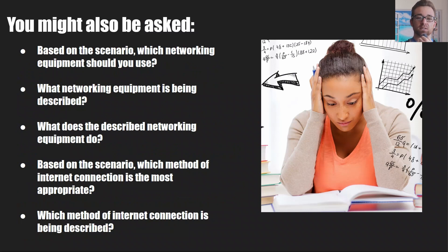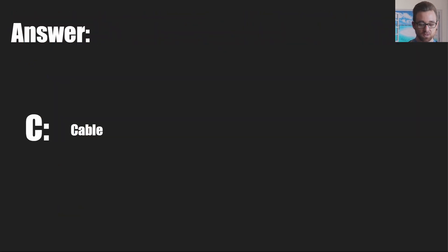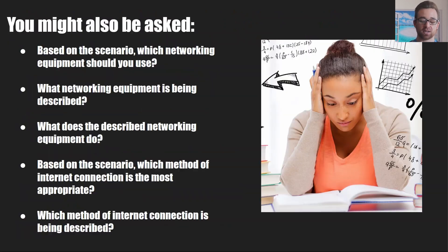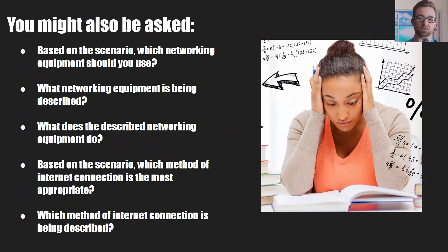Optical network terminal — fiber would need an optical network terminal, and satellite would need a satellite connection. For fiber, you need an optical network terminal, which essentially translates the fiber signal into something you can use in your personal premises to connect to the internet. If there's no ONT at your house, it's not going to be fiber, generally speaking. Knowing what those hardware components do in relation to connecting to the network will help you answer those kinds of questions.